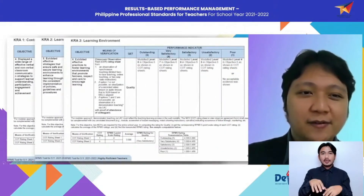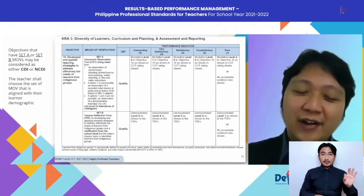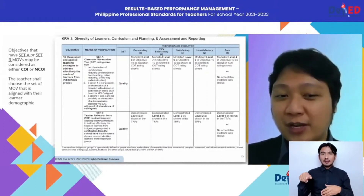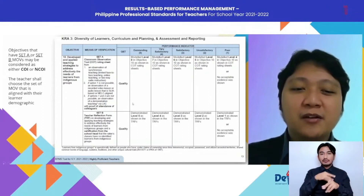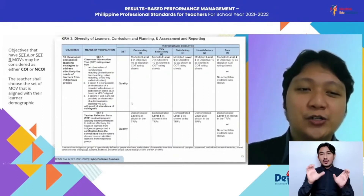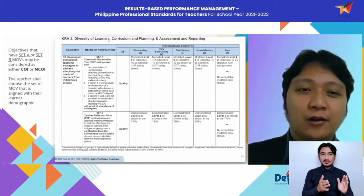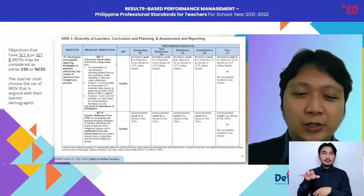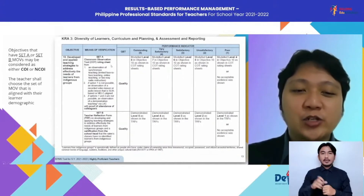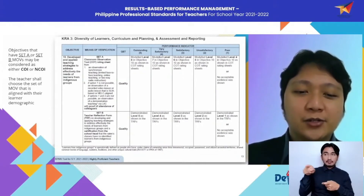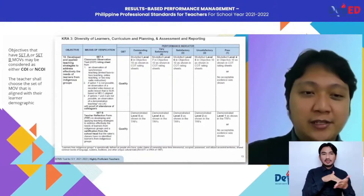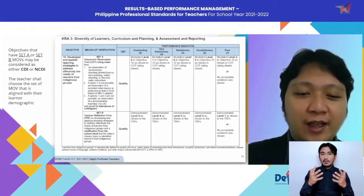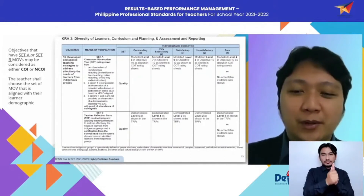For Objectives 9 and 10, there are again two sets of MOVs. If you can show it through classroom observation, you may do so. But if your class does not have any learners from those particular groups, you go with Set B — the teacher reflection form — complemented with a certification from your school head. For Objective 9, the certification states your class has no identified learners with disabilities, giftedness, and/or talents. For Objective 10, no identified learners from indigenous groups. That's a quick overview of the classroom observable indicators for highly proficient teachers.